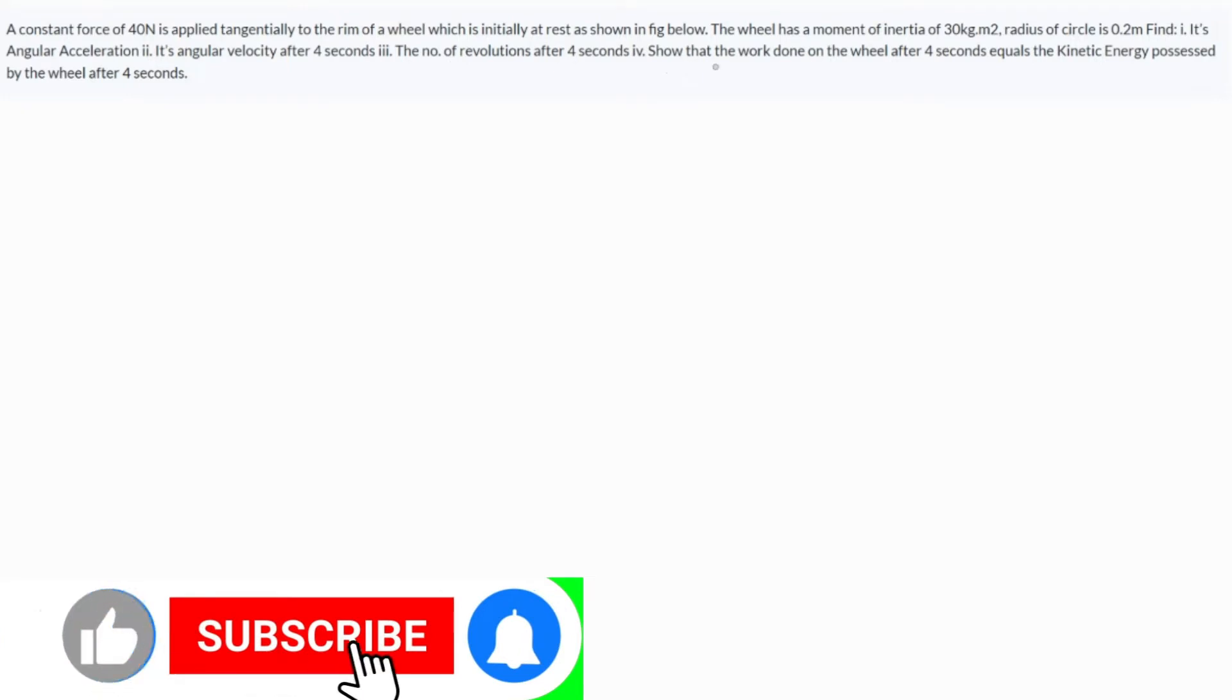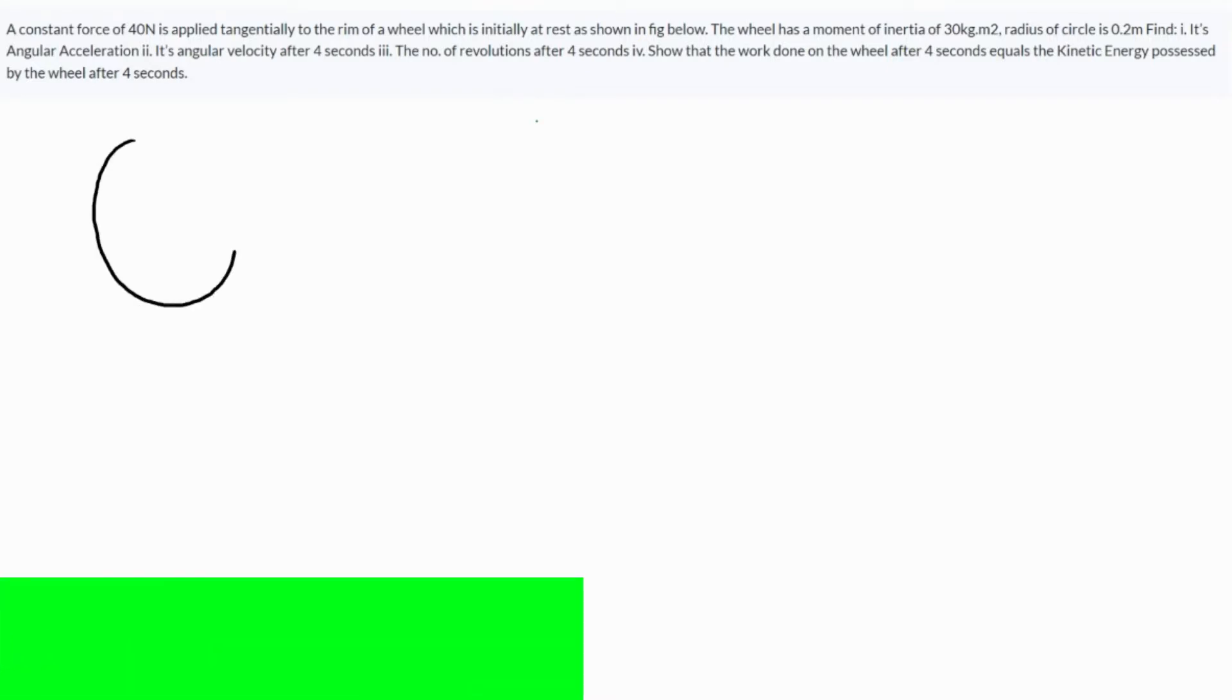In this question, a constant force of 40 Newton is applied tangentially to the rim of a wheel which is initially at rest as shown in the figure. I'll draw the figure here - this is the rim of the wheel and this is how the 40 Newton is applied tangentially to it. The wheel has a moment of inertia of 30 kilogram meter square, and the radius of the circle is given as 0.2 meters.